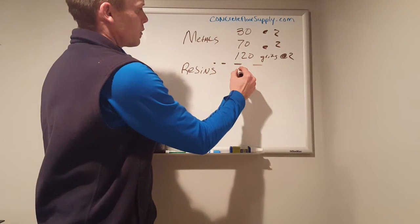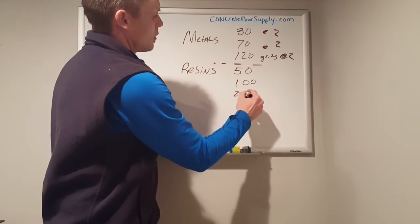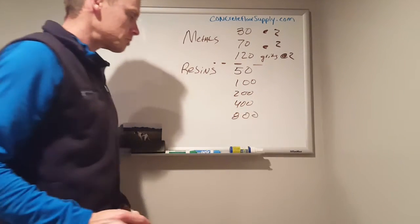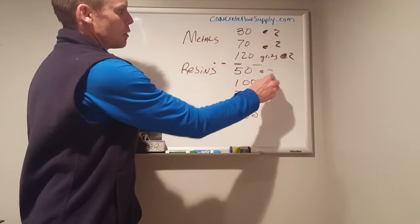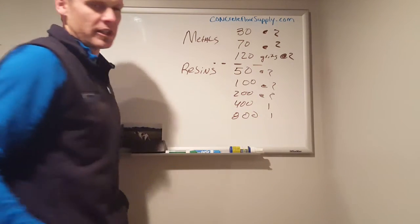Resins work the same way, the numbers get larger: 150, 200, 400, and 800. What you do is you're typically doing two passes at all these until you get to 400 and then you can just do one.